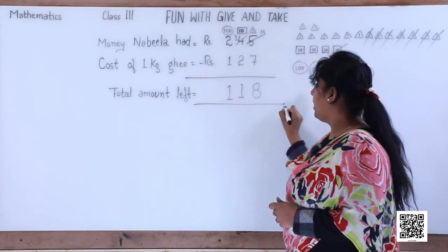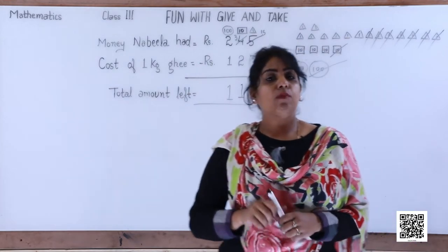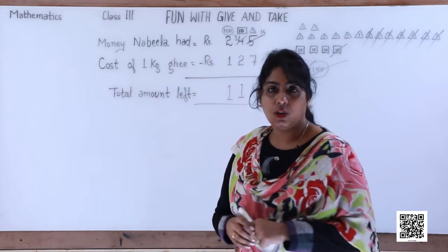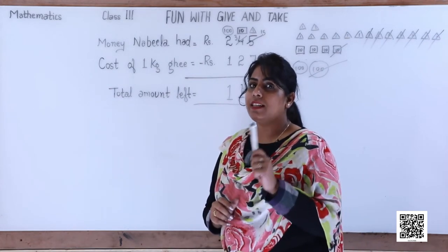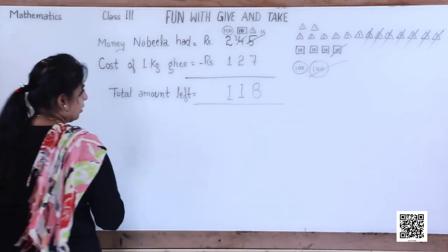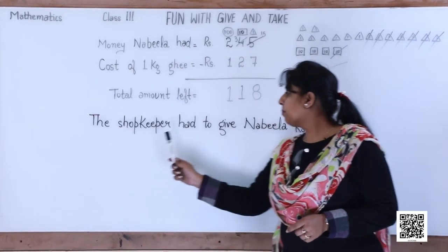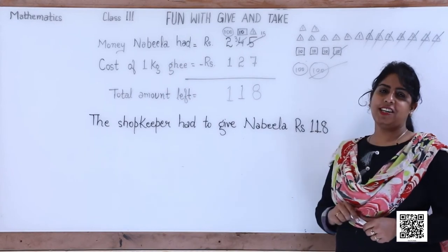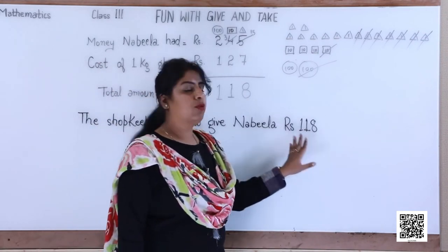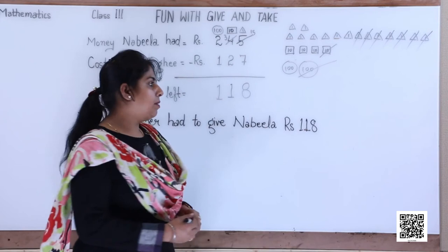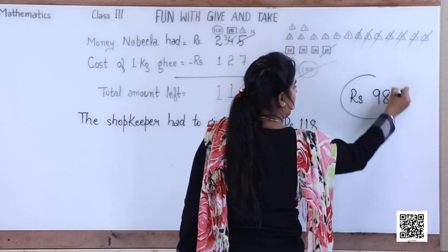So she should get one hundred and eighteen rupees back. But remember how much did the shopkeeper actually return to Nabela? It was rupees ninety-eight.